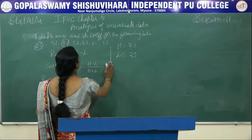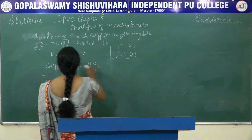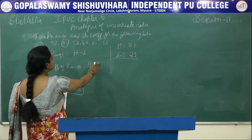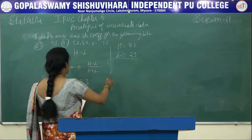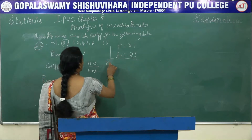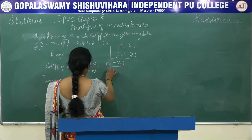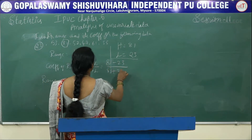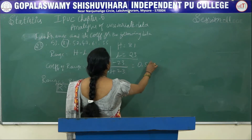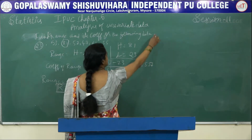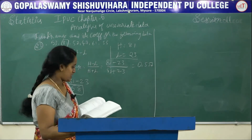Next, to find coefficient of range, it is highest minus lowest by highest plus lowest. This is 81 minus 23 divided by 81 plus 23. This is 0.557.